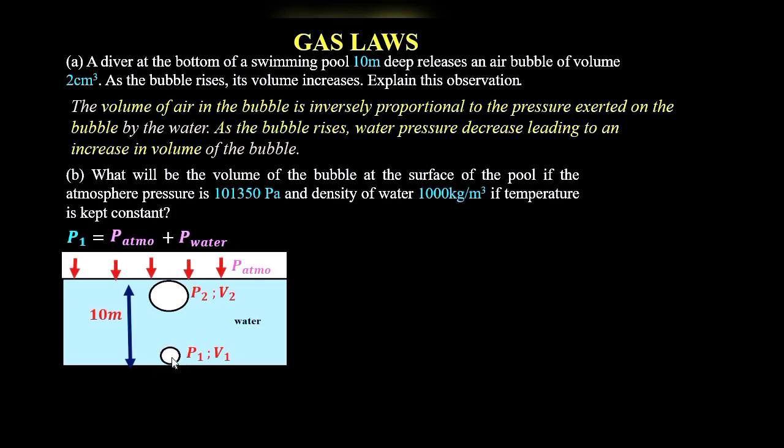So in order to calculate pressure at the bottom, we'll have atmospheric pressure plus pressure due to water column. Pressure due to water column is obtained as h·ρ·g, where h is the depth of the liquid, ρ is the density of the liquid, and g is the gravitational field strength. The height of the liquid here is 10 meters, and ρ is the density of water which is 1000 kg/m³.